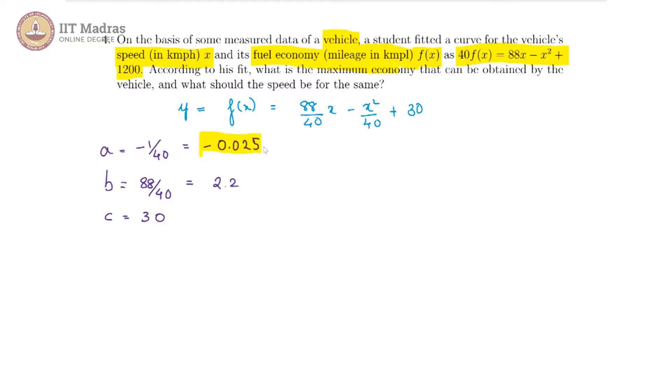Now, we may observe that the x square coefficient is negative. This is a downturn parabola, which is why they are asking what is the maximum economy. At the vertex, you will get the maximum fuel economy. We need to find the vertex.